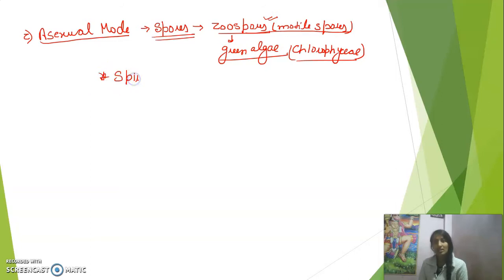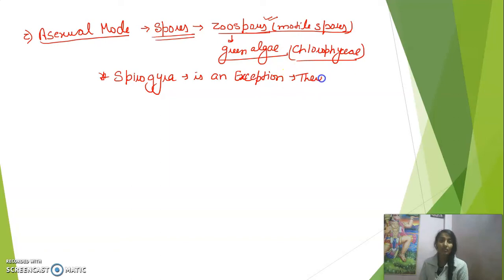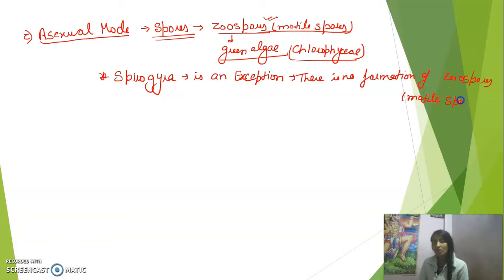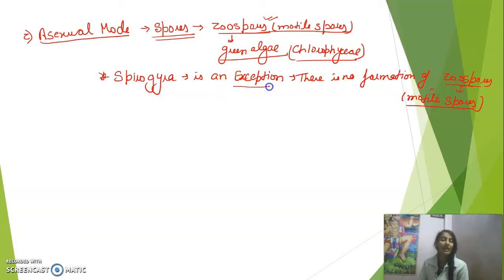We are now studying Spirogyra. Spirogyra is an exception. Why is it an exception? Because it does not have zoospore formation — there is no formation of motile spores in Spirogyra. That is why Spirogyra is a green algae exception. This is a very important point — please remember this for exams.